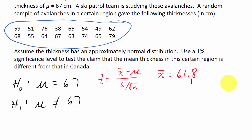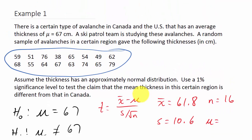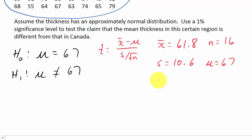Next we need the sample standard deviation s. Using the standard deviation formula on the data values, we get s = 10.6. We also know n = 16, μ = 67 (from H₀), and the degrees of freedom = n − 1 = 16 − 1 = 15.